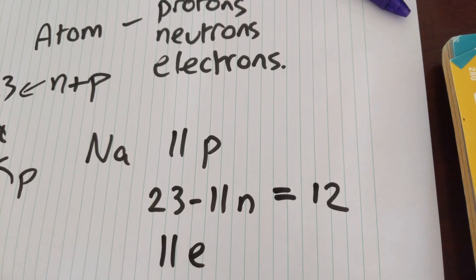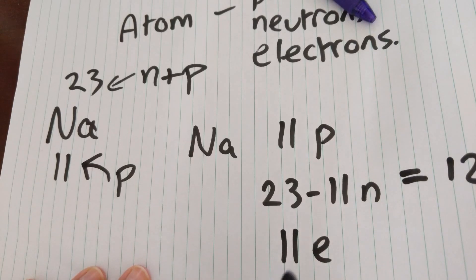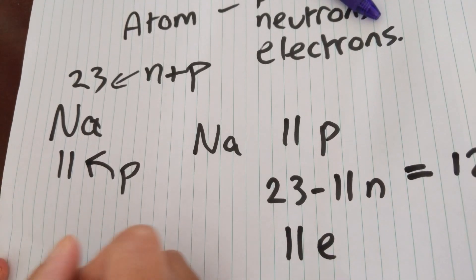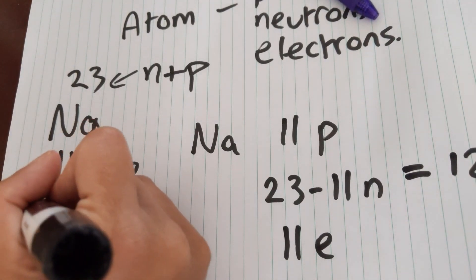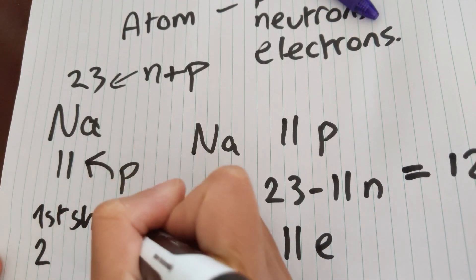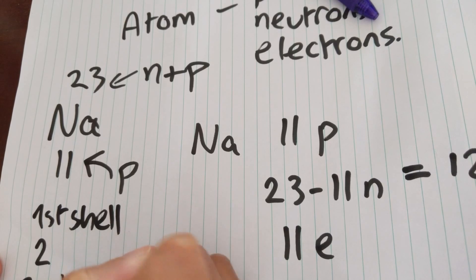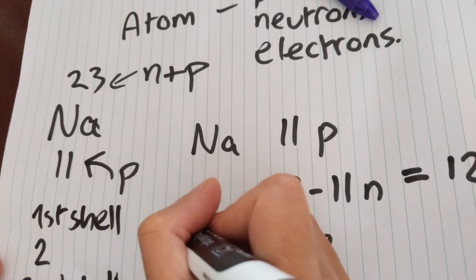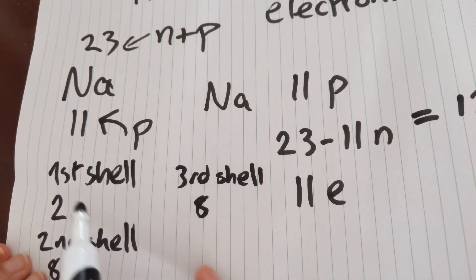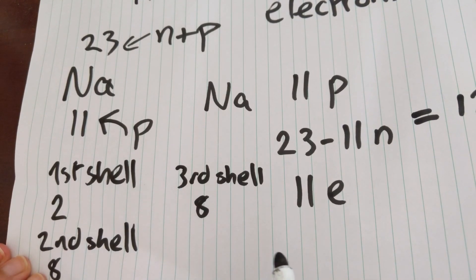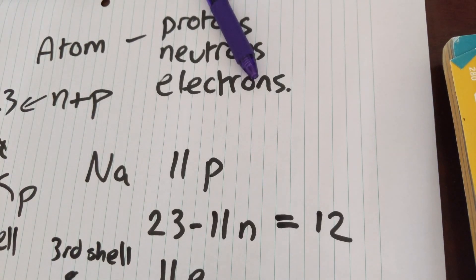So to draw our electron configuration diagram, we've got to follow these rules. The first shell of electrons can have a maximum of two electrons. The second shell has a maximum of eight. The third shell has a maximum of eight. And we must fill from the first shell outwards. So we've got 11 electrons in sodium. So let's take a look at how that's going to look.